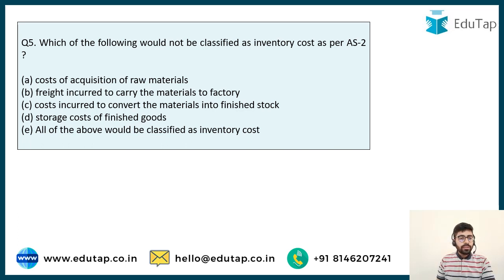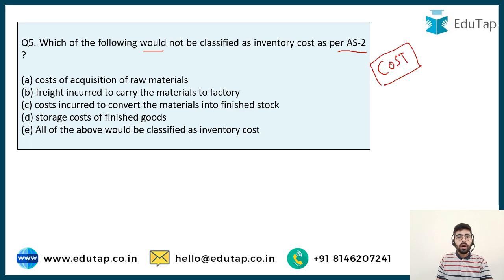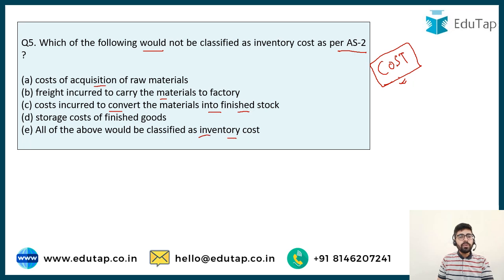Now the last question — try to answer this one yourselves since we've discussed the concepts. Which of the following would NOT be classified as inventory cost as per AS2? Options: cost of acquisition of raw material, freight incurred to carry material to the factory, cost incurred to convert material into finished stock, storage cost of finished goods, or all of the above. Note the word 'not' is very important here.